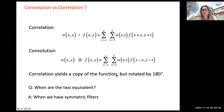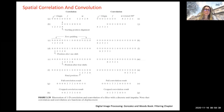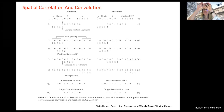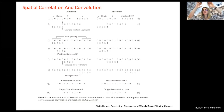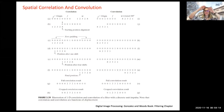When are the two equivalent? If the filter coefficients are symmetric, flipping will not change anything — so correlation and convolution are equivalent when filters are symmetric. Correlation yields a copy of the result but rotated by 180 degrees — that's a flip in X and flip in Y direction for 2D images. Let's look at a 1D example of correlation versus convolution.